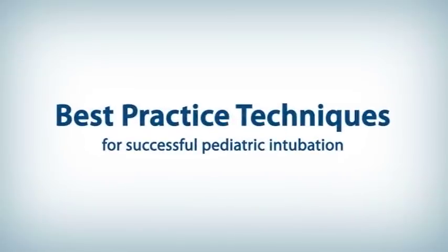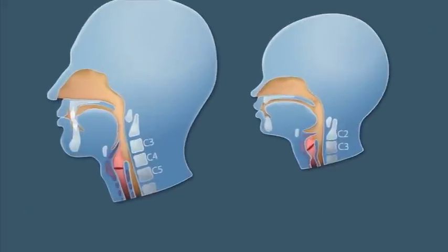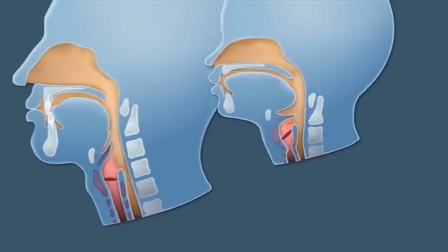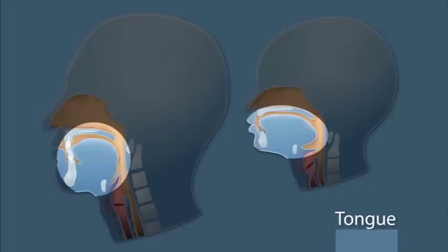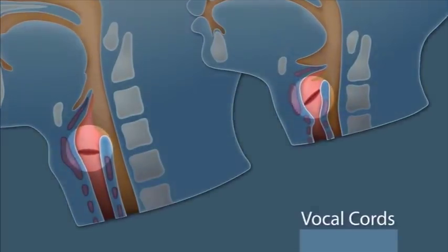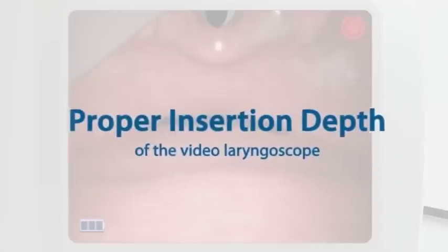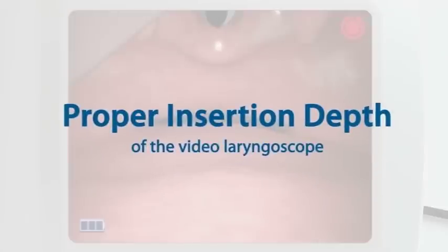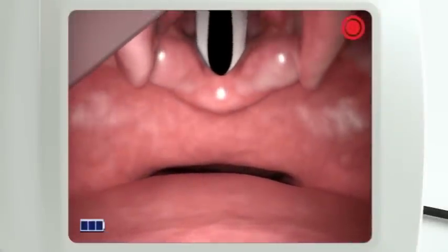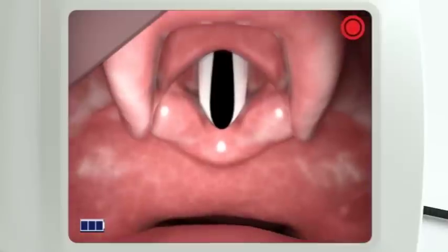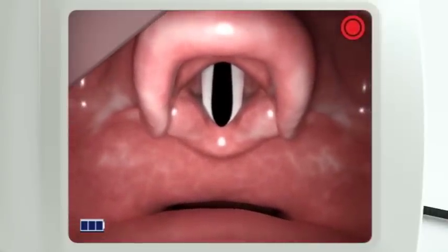Now that we've covered the basics, here are some best practice techniques with specific tips to help ensure successful pediatric intubation. Developmental differences in the airway anatomy of pediatric patients may present challenges when obtaining a view and advancing the endotracheal tube. A common challenge for clinicians trained in direct laryngoscopy is placing the GlideScope Video Laryngoscope too deep in the mouth and applying too much lift force. If you're seeing the esophagus instead of the cords, pull the GlideScope back slightly, about one to one and a half centimeters, and then create a slight lift to obtain the glottic view.